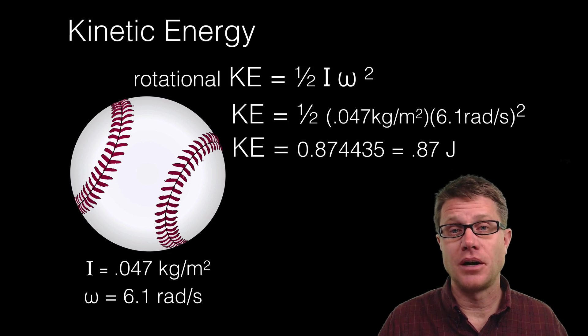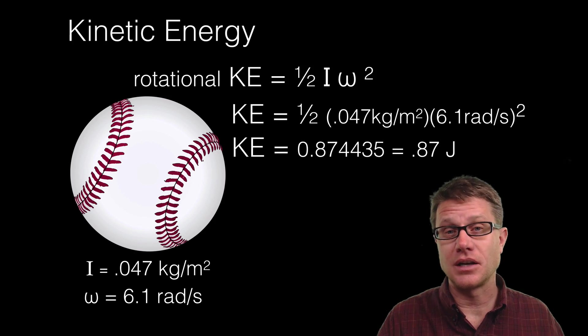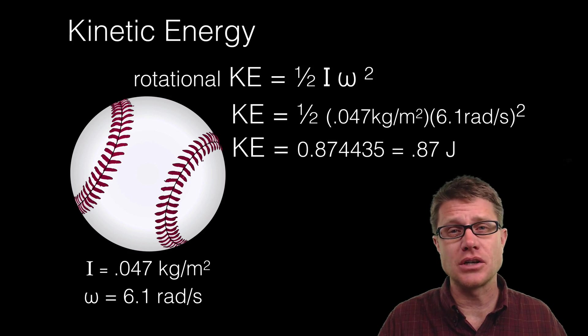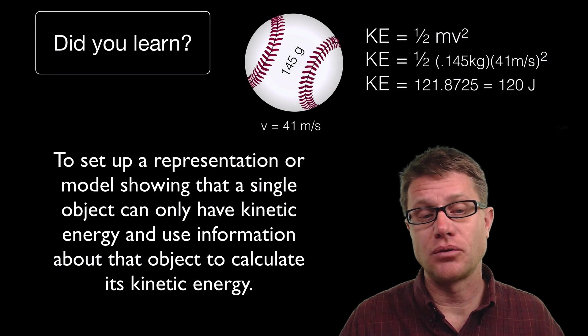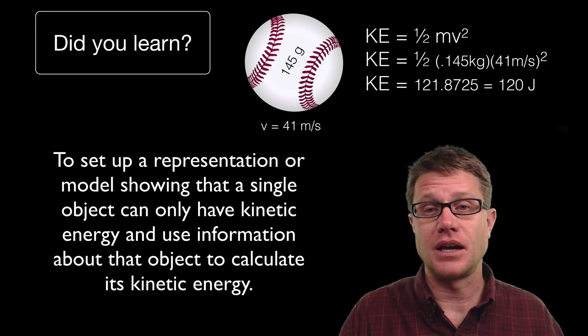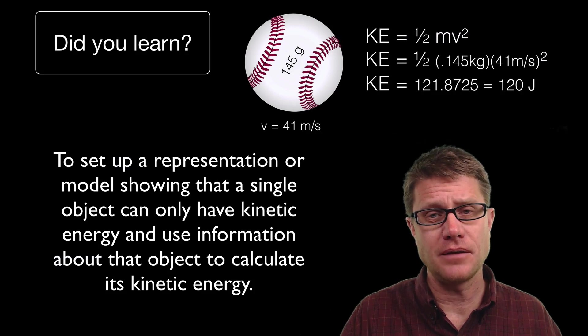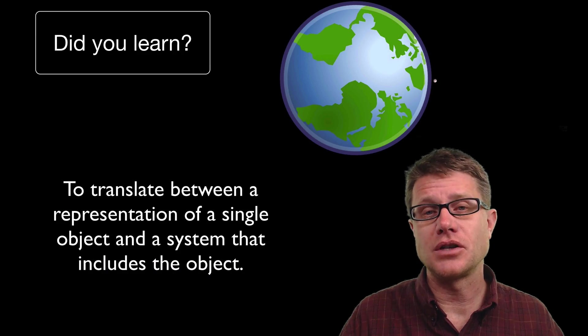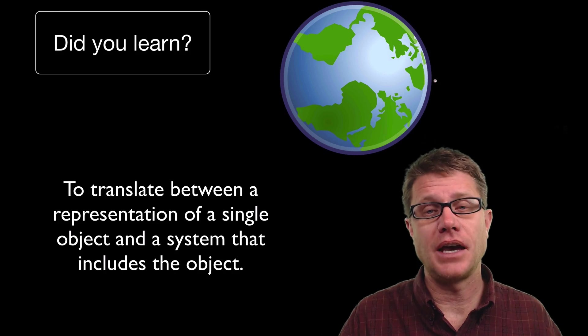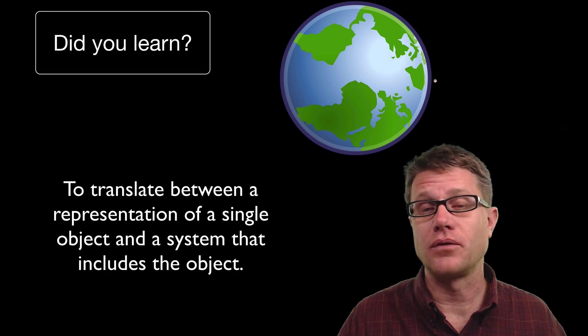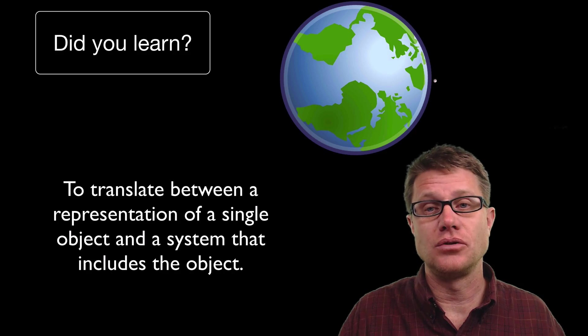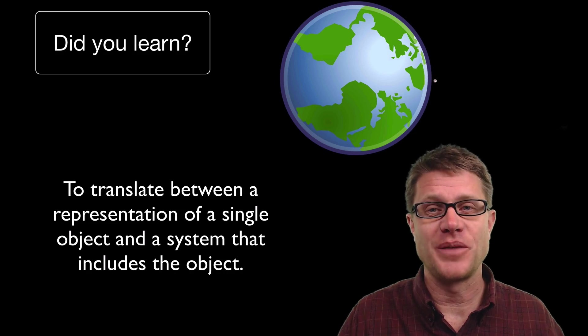And so as you pitch a baseball it is going to have that translational kinetic energy. But also the rotational kinetic energy as well. And so did you learn to use a model to represent a single object that has kinetic energy? And can you calculate that? And then finally do you understand that an object by itself can't have potential energy. We have to have another object or a system in order for us to store that energy due to position? I hope so. And I hope that was helpful.